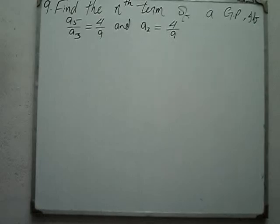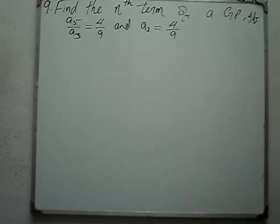Find the nth term of a geometric progression, given that a5 over a3 is equal to 4 over 9, and a2 is equal to 4 over 9.